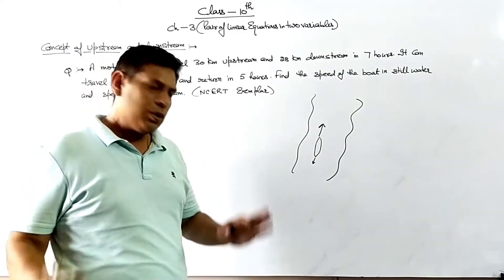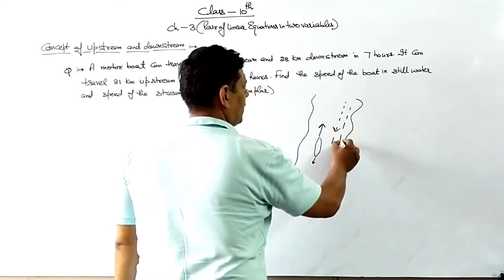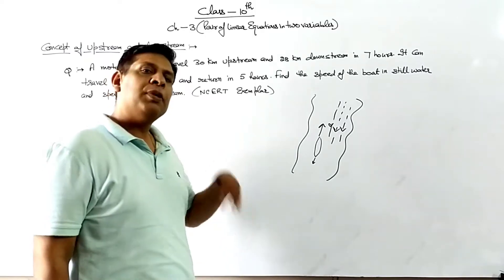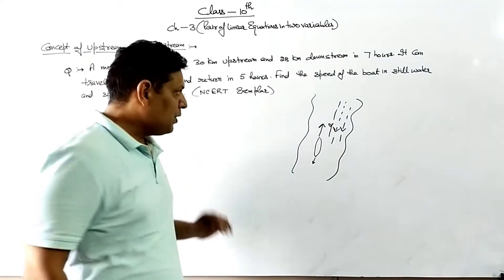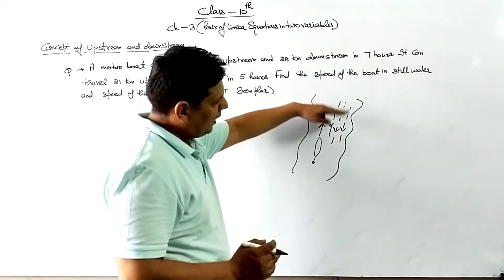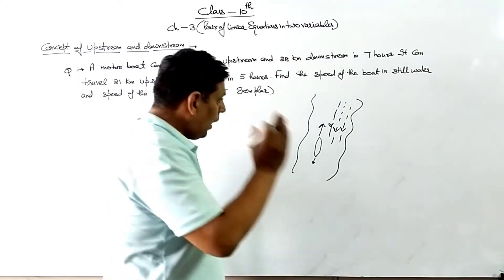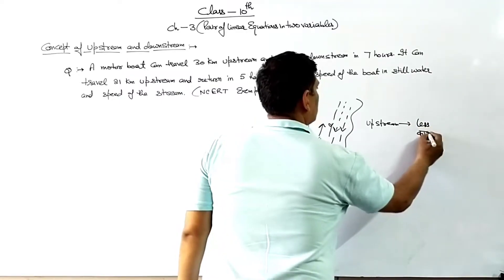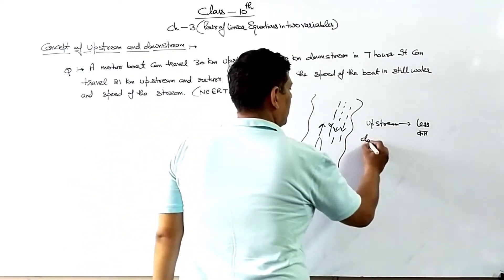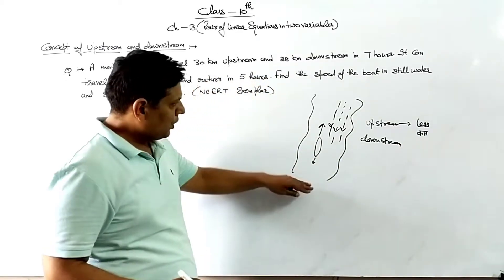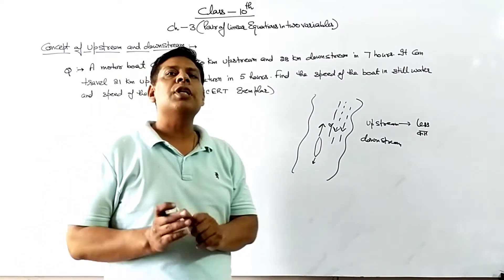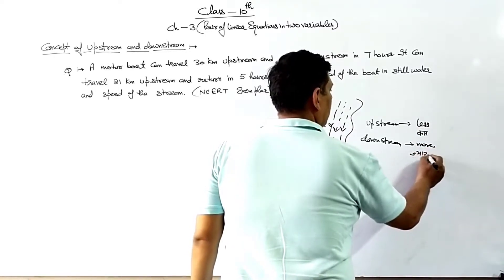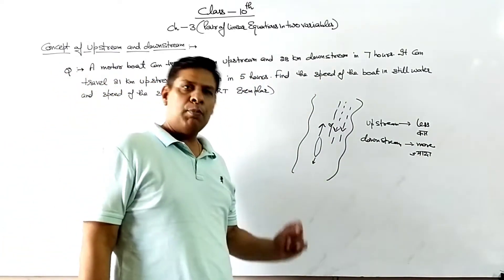And as we all know, this is called the speed of the current of water, or speed of stream. When our boat goes upstream, it moves against the current, and when it goes downstream, it moves with the current.